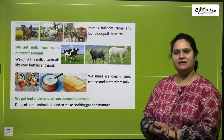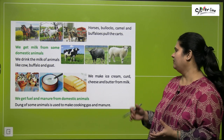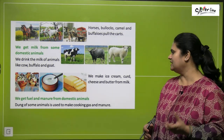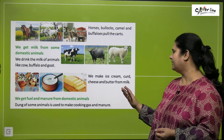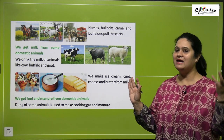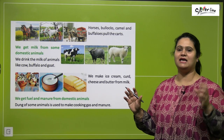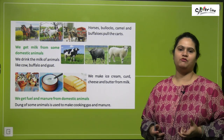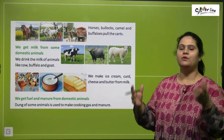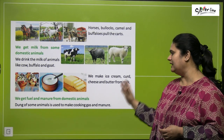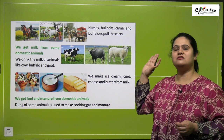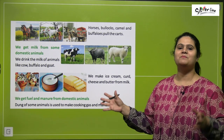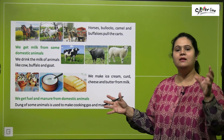From milk, we make ice cream, curd, cheese, and butter. We also get ghee from milk. All of these dairy products come from animal milk.